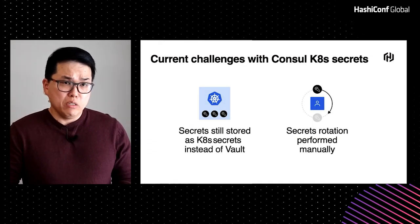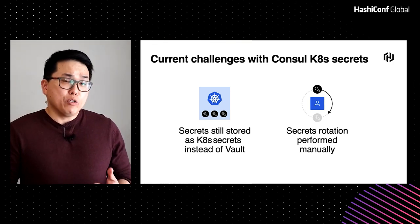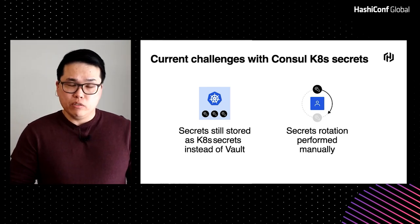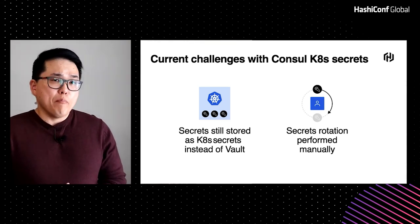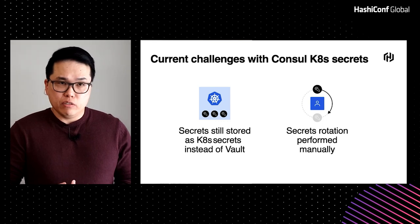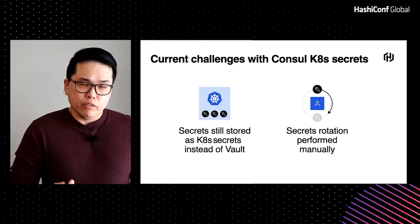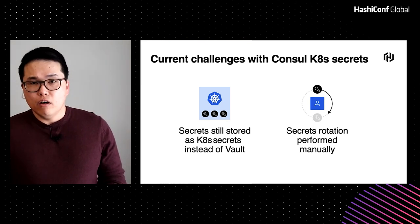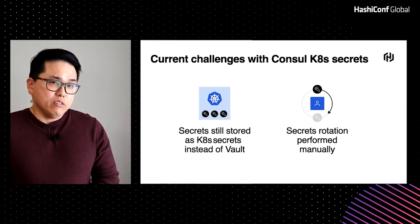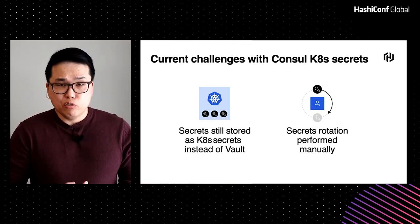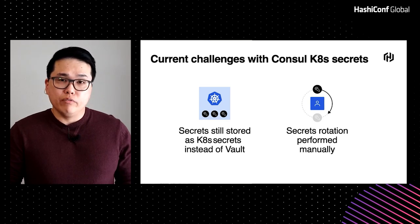There are some challenges that customers and practitioners face when leveraging Kubernetes secrets with Consul. When organizations have standardized on Vault, they are not allowed to use Kubernetes secrets in their environment. They want to use Vault and something like a Vault agent to expose those secrets to their pods, which is currently a manual process. Similarly, if you need to rotate a secret, all the secrets inside Consul need to be rotated in their own special way, which involves many steps and is challenging to perform repeatedly and consistently.